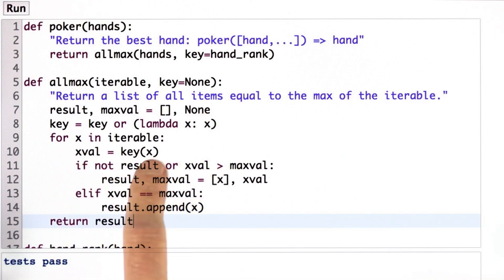And then I'm going to go through the iterable. For each x, I come up with an x value, which I get by applying the key. And if the x value is greater than the max value so far, or if I don't have a result yet at all, and that would be the case if I'm at the first element of the iterable,